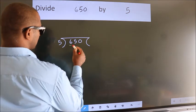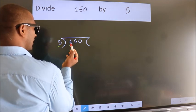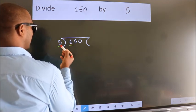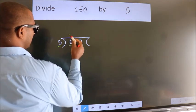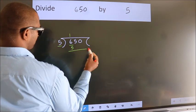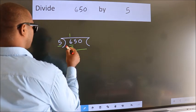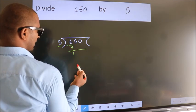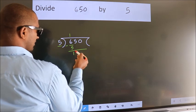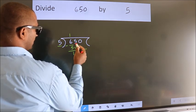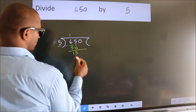Here we have 6, and here 5. A number close to 6 in the 5 times table is 5 — 5 once is 5. Now we subtract and we get 1. After this, bring down the beside number, so 5 comes down, giving us 15.